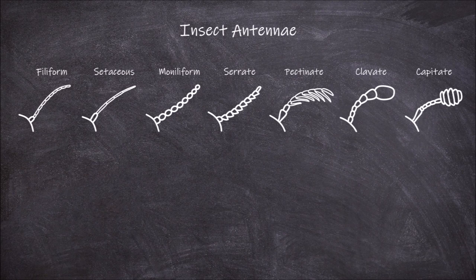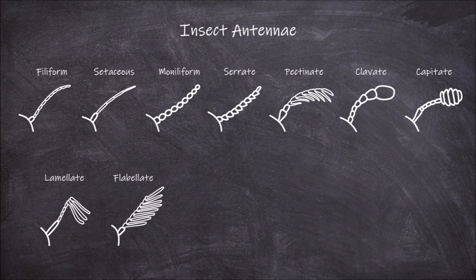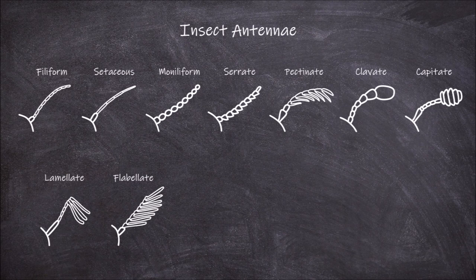In lamellate antennae, the end segments are flattened and elongated into plates, giving a folded fan-like appearance. In flabellate antennae, all the flagellum segments are extended with long lobes, giving a fan-like appearance.